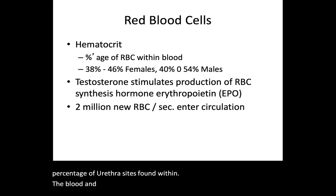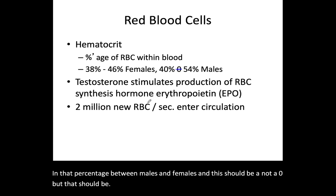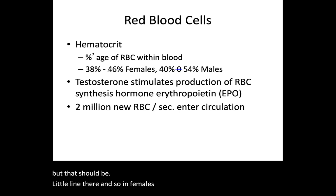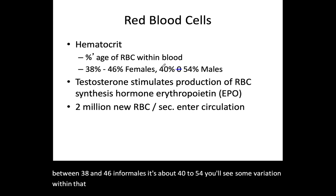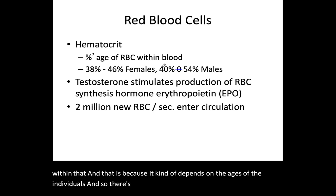There is a difference in hematocrit between males and females. In females, the hematocrit range is anywhere between 38% and 46%. For males, it is about 40% to 54%. There is some variation depending on the ages of individuals, so there is a little floating variance within these ranges.